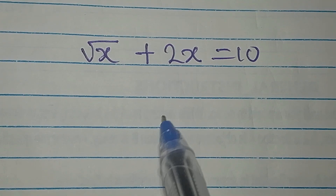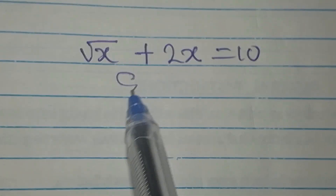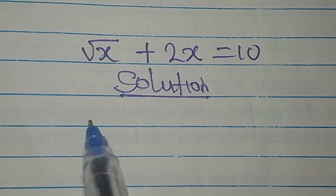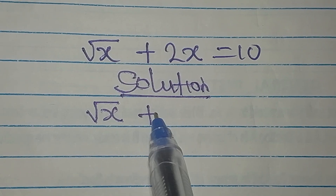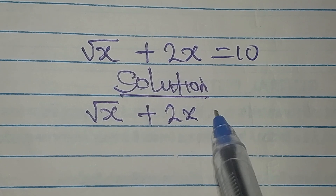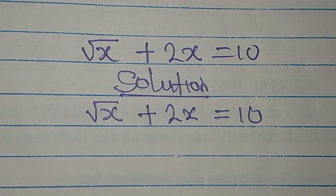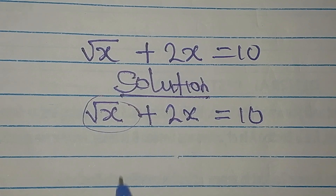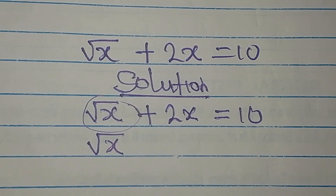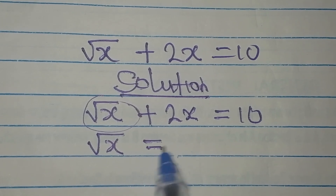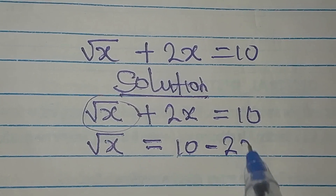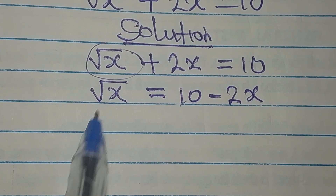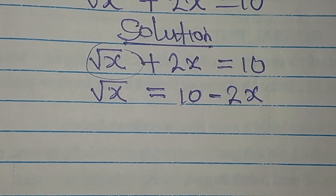Let's provide the solution to this problem. We have the equation: square root of x plus 2x equals 10. The first thing we are going to do is make square root of x the subject, so that root x will be on the left hand side, giving us: square root of x equals 10 minus 2x. The next target is to remove the square root, and the only way to do that is to square both sides.